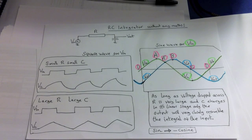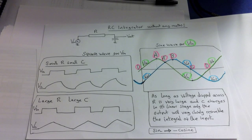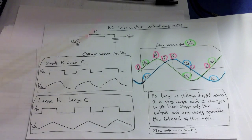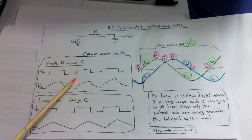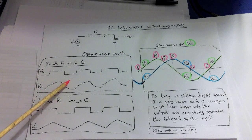This is the RC integrator lab. There's going to be no maths here — I'm just going to talk through what's happening. On the left side here, let's talk about the square wave, and I'm going to show this first on the scope.